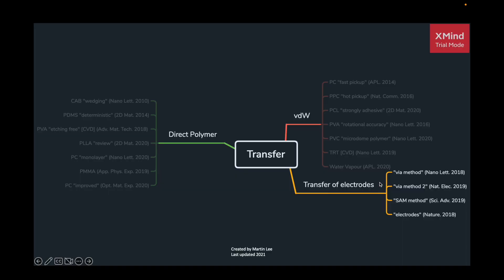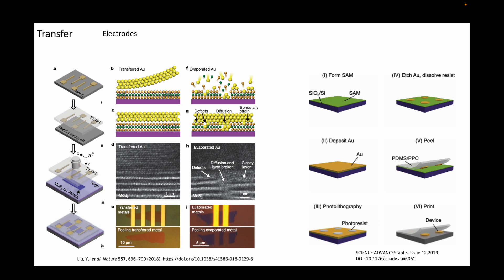The final class of transfer methods we will look at is for the transfer of electrodes. In these methods, instead of transferring the 2D material onto pre-patterned electrodes, pre-patterned electrodes are transferred onto the 2D flakes. There are several instances when this route should be considered. So let's take a look at these techniques in detail. As I mentioned before, directly evaporating metals on top of 2D materials can severely damage the 2D flakes.